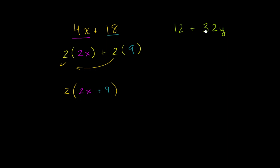Well, what's the largest number that's divisible into both 12 and 32? 2 is clearly divisible into both, but so is 4. And it doesn't look like anything larger than 4 is divisible into both 12 and 32. The greatest common factor of 12 and 32 is 4.